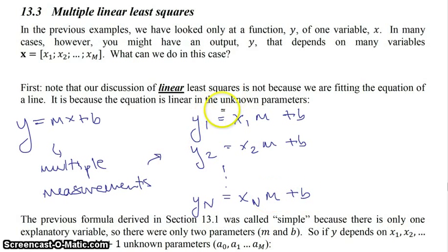So these are all equations for a line, given different values of the data. But it's linear least squares not because they're equations for a line, but because the equation is linear in the unknown parameters when you take the partial derivatives with respect to the parameters.